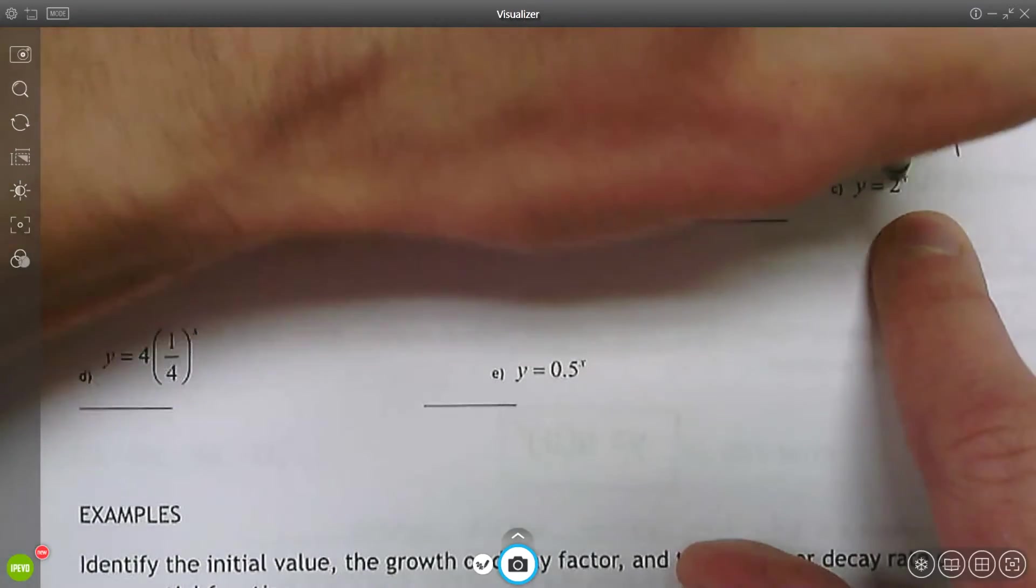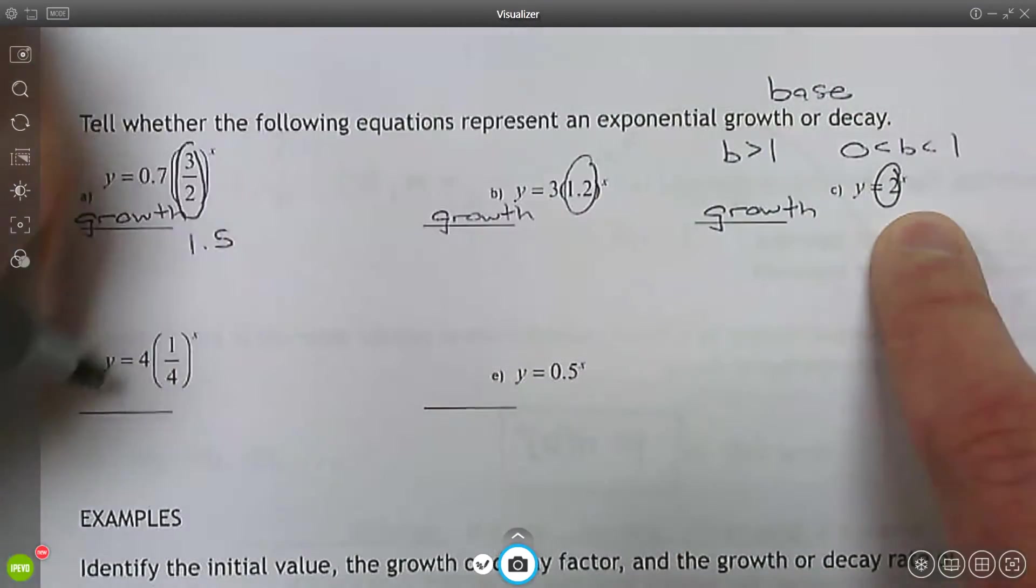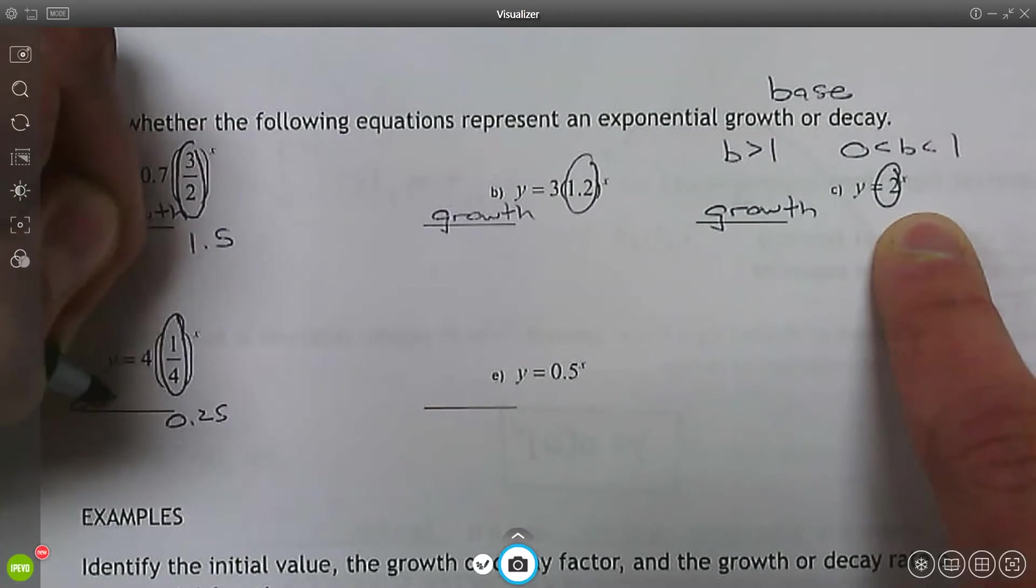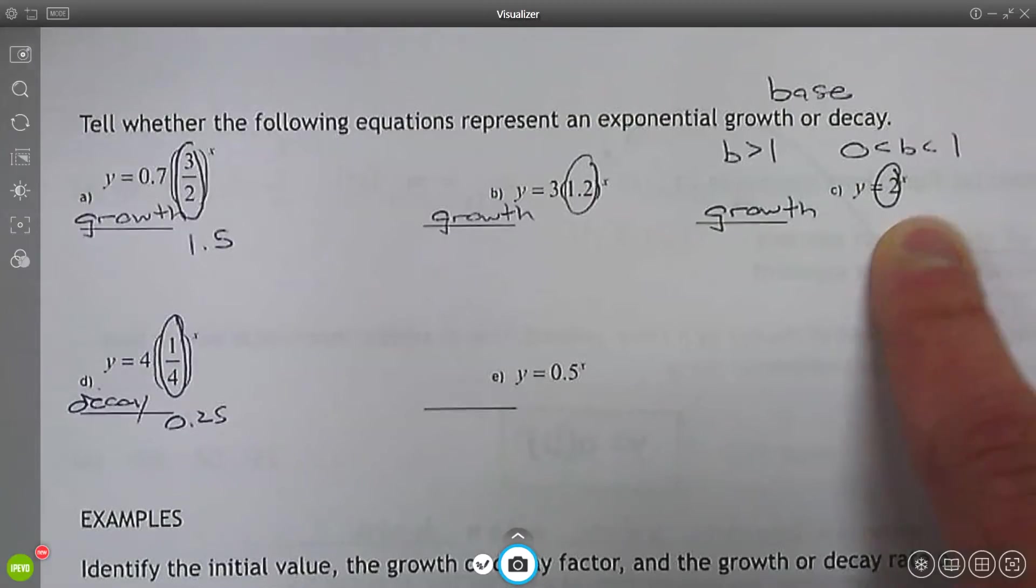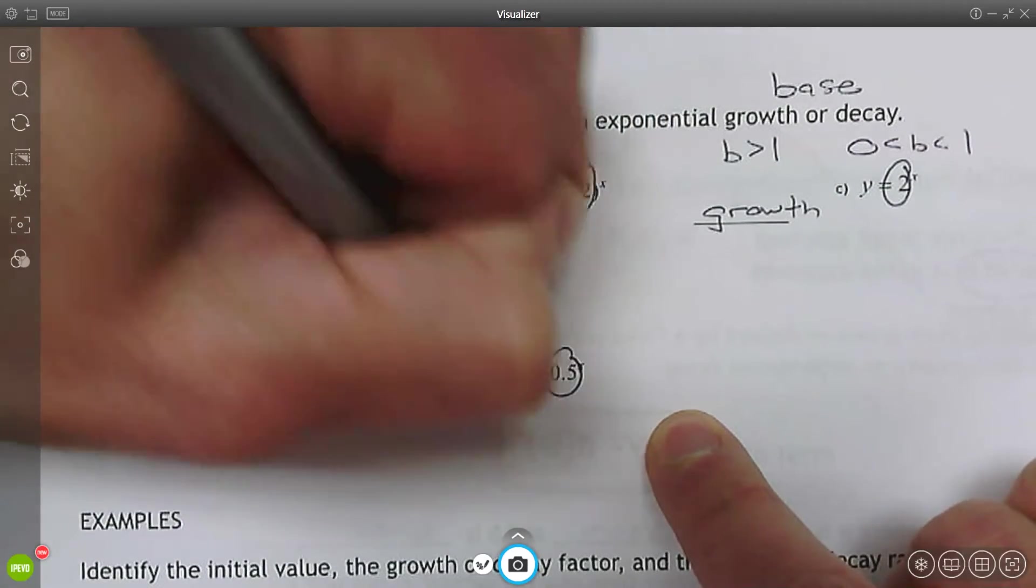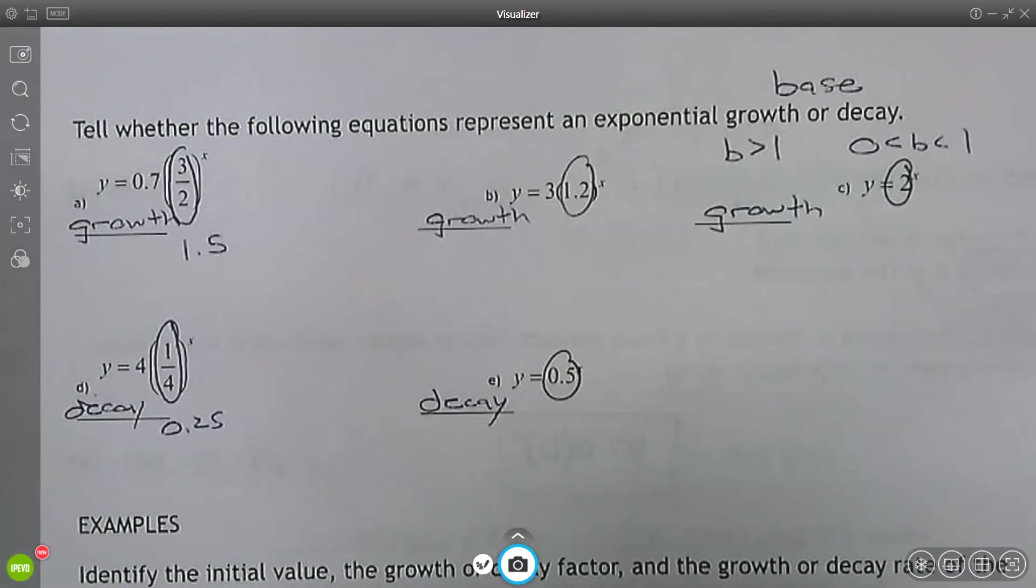C, the base is 2. So this is growth. D, 1 divided by 4 is 0.25. This is exponential decay. And E, the base is 0.5. So that's less than 1 or greater than zero. That would be exponential decay.